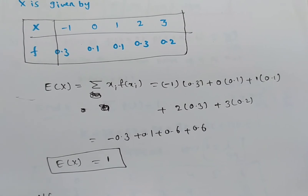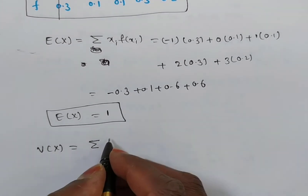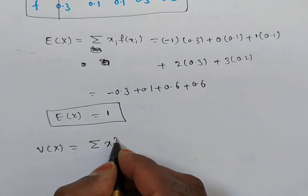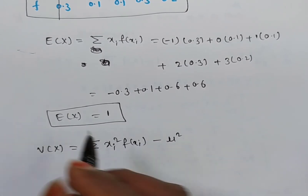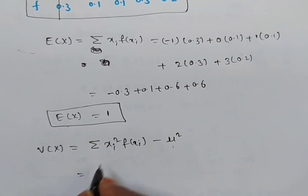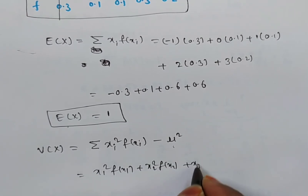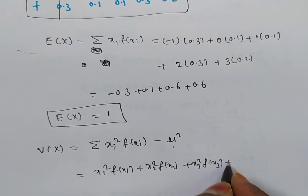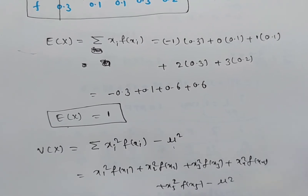Next, what do we want? Variance. Variance, denoted V(x), for a discrete random variable is equal to summation of xi squared into f(xi) minus mu squared, where mu is the expectation or mean. That expands to x1² f(x1) plus x2² f(x2) plus x3² f(x3) plus x4² f(x4) plus x5² f(x5) minus mu squared.